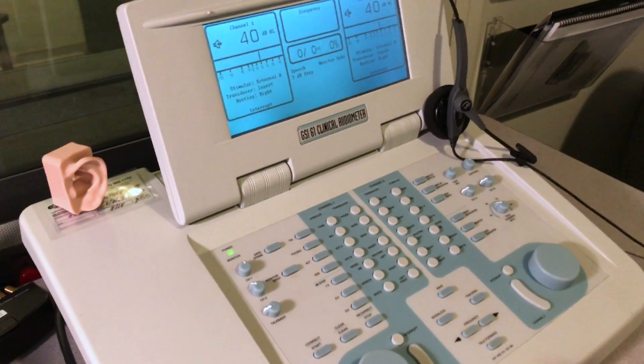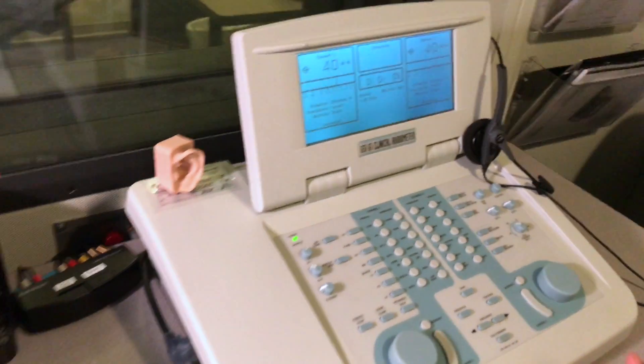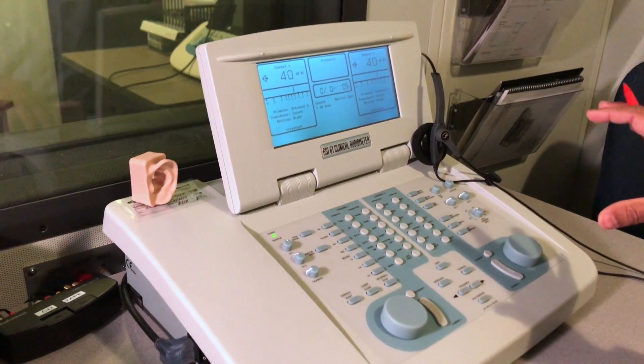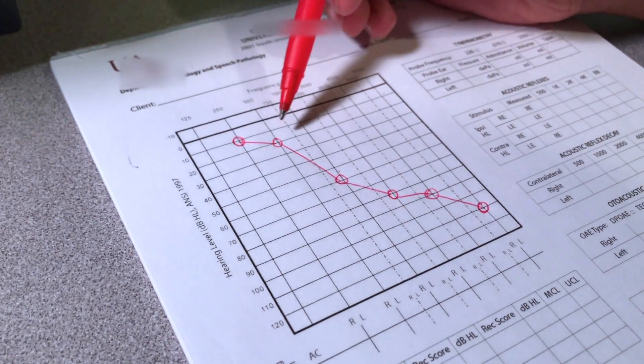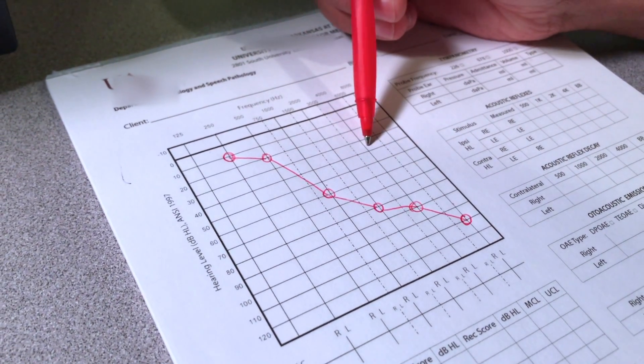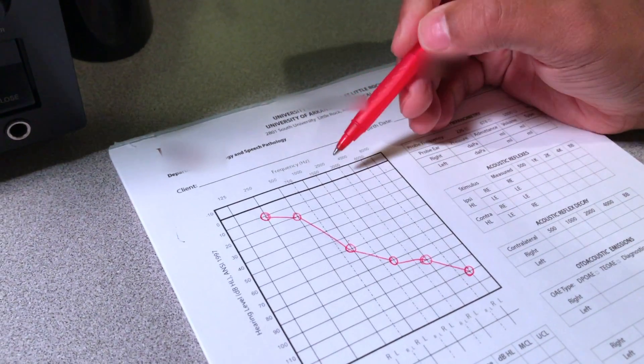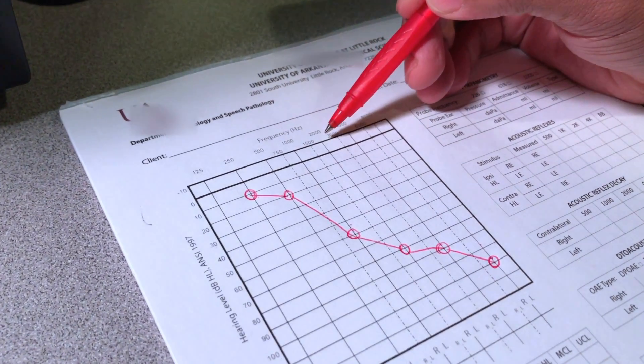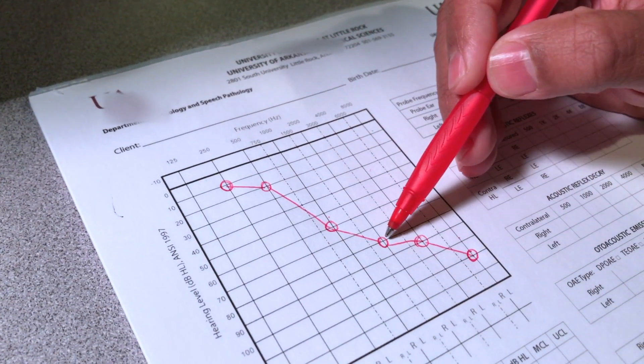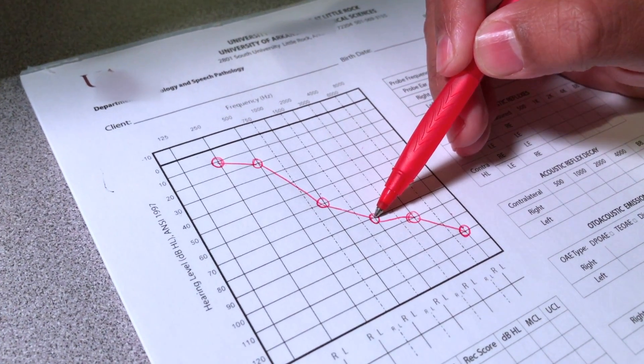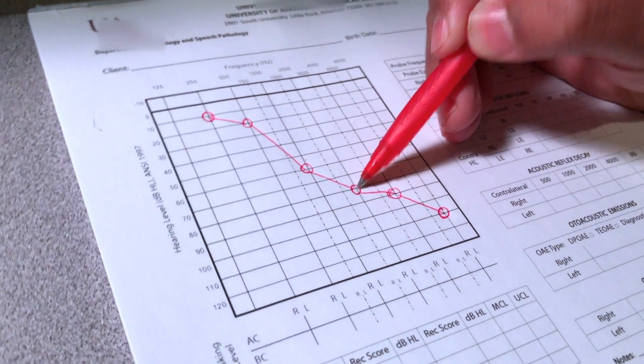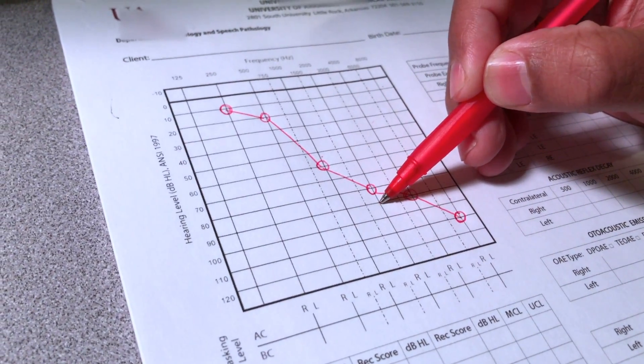Now that we have set the VU meter to zero, what we need to do is set the noise level based on the person's threshold. This test can be performed between 500 and 4000 Hertz. Let's say we are starting to measure the threshold at 2000 Hertz. We're suspecting there is a dead region at 2000 Hertz. What we need to do now is present the noise 10 dB above the threshold.